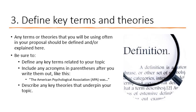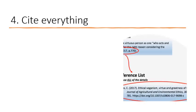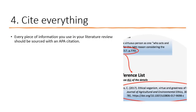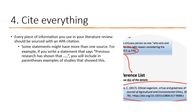Describe any main theories that underpin your topic. For example, if you're working with attachment theory, write about what that theory is about. Next, cite everything. Your lit review is not you talking — every single thing you're putting in your lit review is someone else's work and you need to cite it. If you make a statement like 'previous research has shown that...' you'll include in parentheses examples of studies that showed that. Anytime you mention previous research or relate any finding or method, you need to put the sources in parentheses after the stated fact.